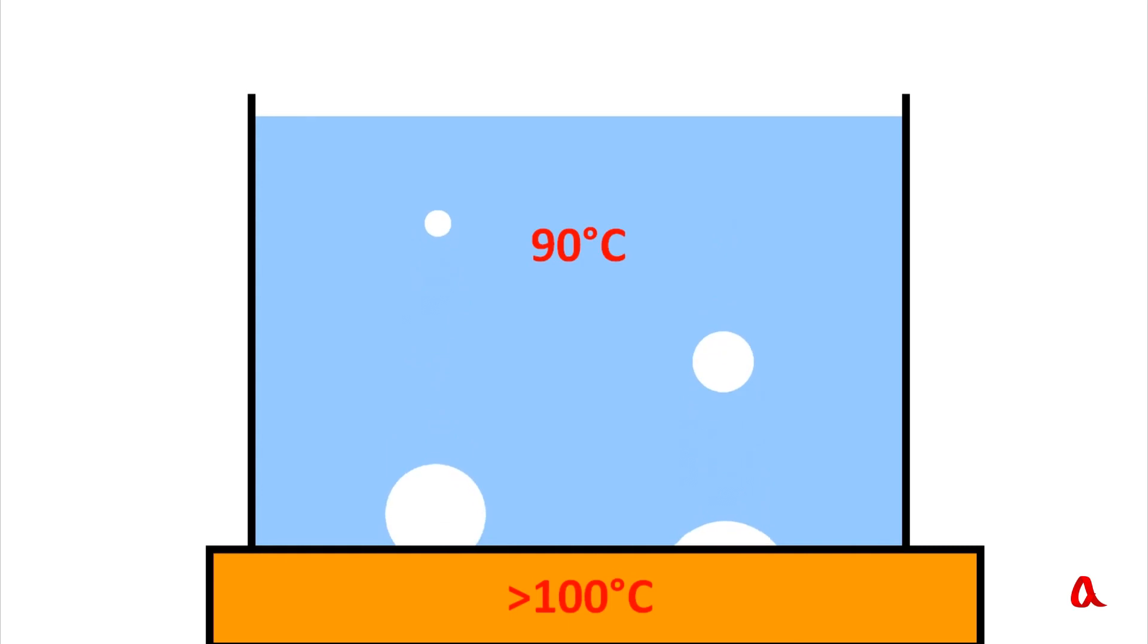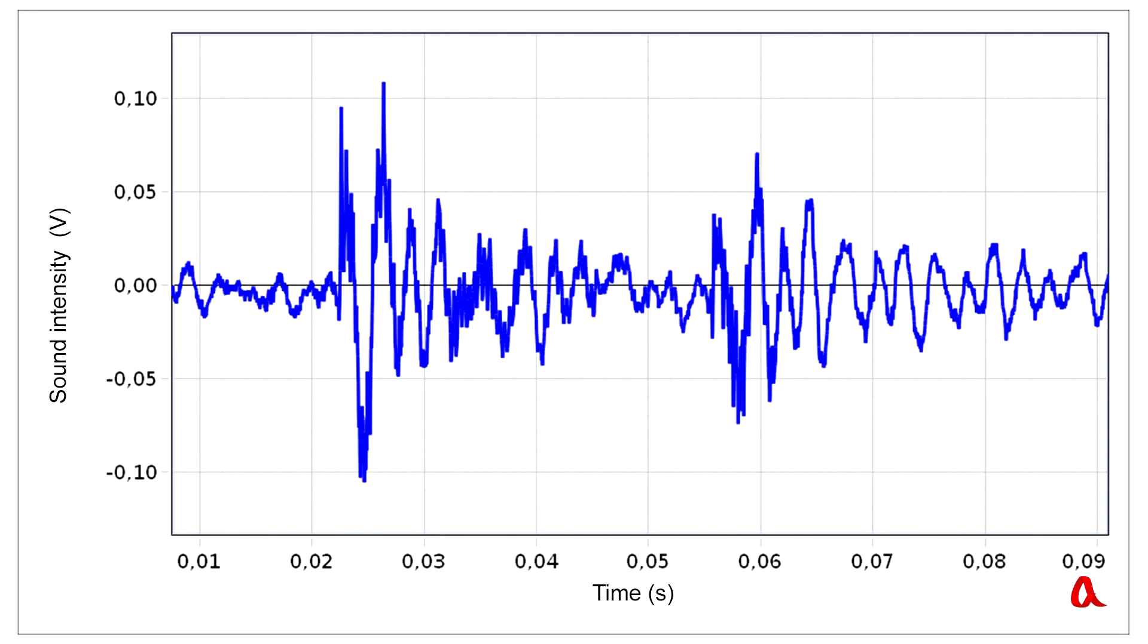When a bubble surfaces, it cools down. The vapor in it gets condensed and the bubble bursts. When bursting, each bubble makes a sound. We have recorded the sound signal. This is what a burst bubble sound looks like. And here's another one.